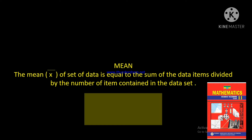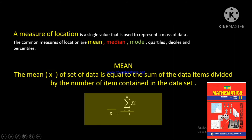The mean is defined as: the general meaning of a set of data is equal to the sum of data items divided by the number of items contained in the data. The formula is: mean equals x-bar, which equals the summation from i equals 1 to n of x-i, divided by n, where i is the item index and n is the number of items.